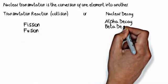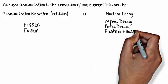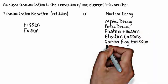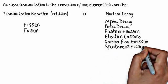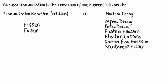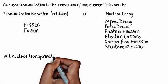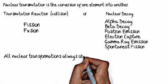For nuclear decay, there are six ways that you can create a new element: alpha decay, beta decay, positron emission, electron capture, gamma ray emission, and spontaneous fission. Technically, gamma ray emission does not create a new element, but it is a form of nuclear decay.